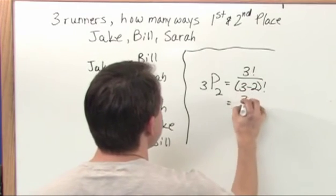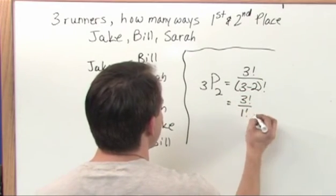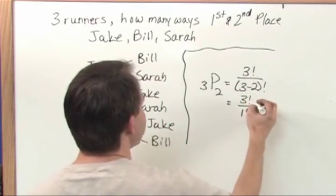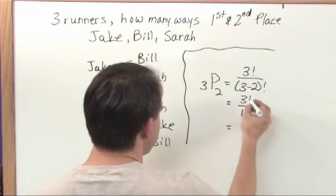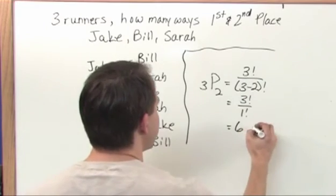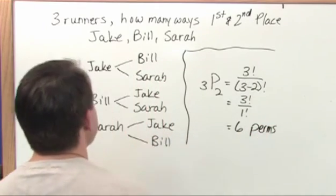And when you do this, you'll get three factorial on the top, one factorial on the bottom and what you'll have is three factorial, which three times two is just going to give you six. So there's six perms in that case.